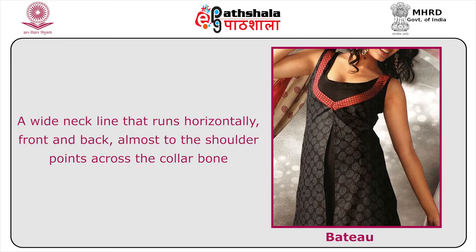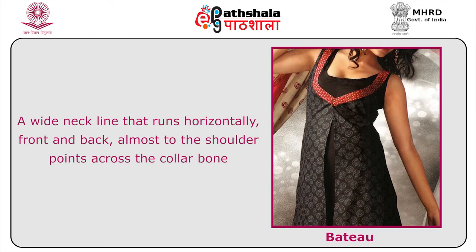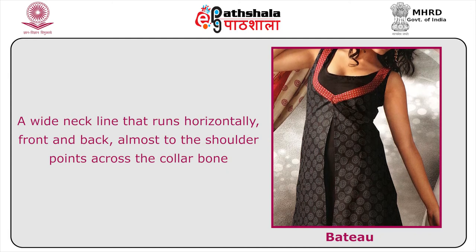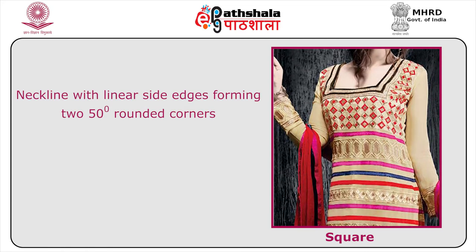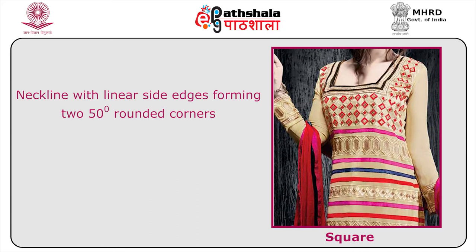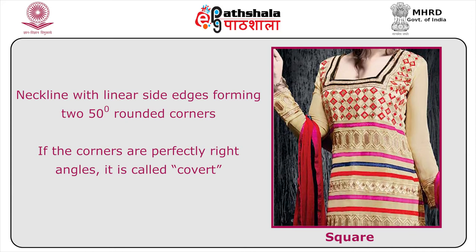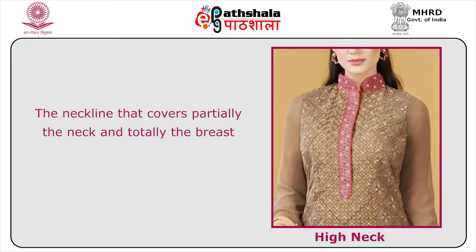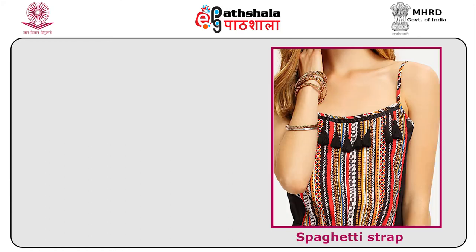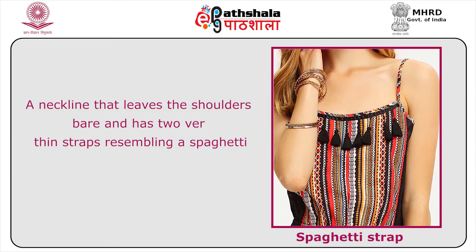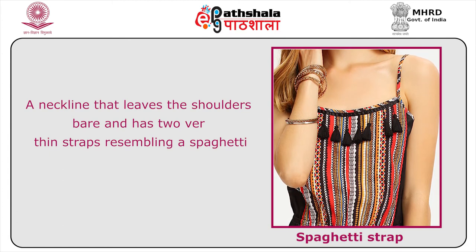The bateau is a wide neckline that runs horizontally front and back, almost to the shoulder points across the collarbone. The square neck has linear side edges forming two right-angle corners; if the corners are perfectly right angles, it is called covert. The high neck covers partially the neck and totally the breast. The spaghetti strap leaves the shoulders bare with two very thin straps resembling spaghetti.